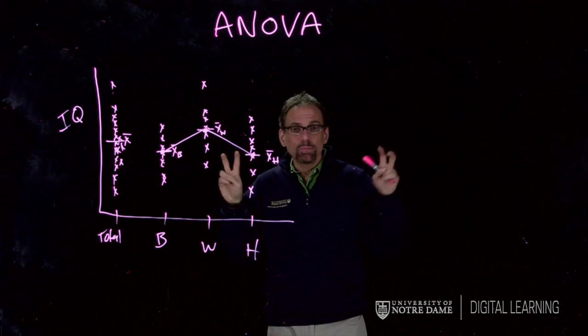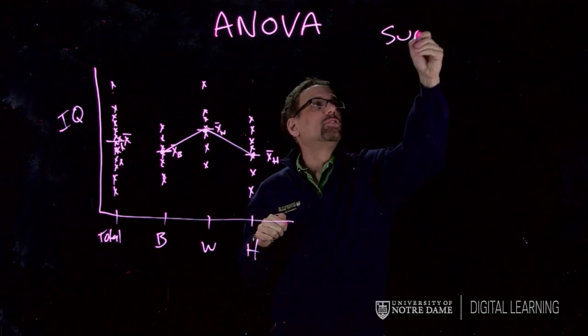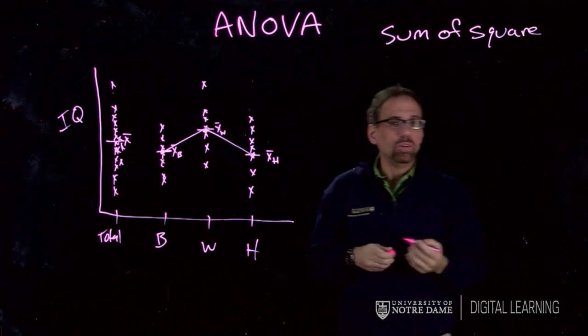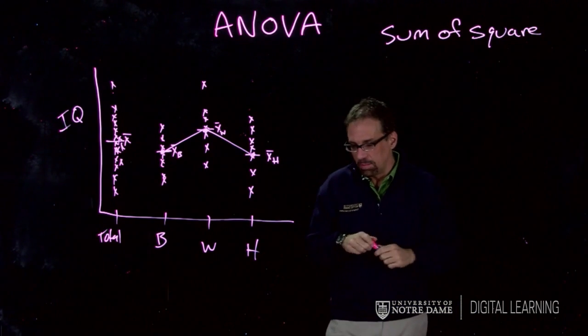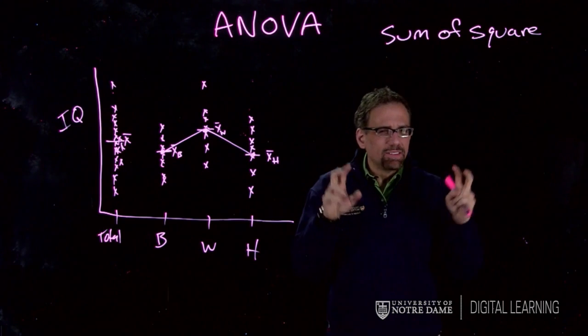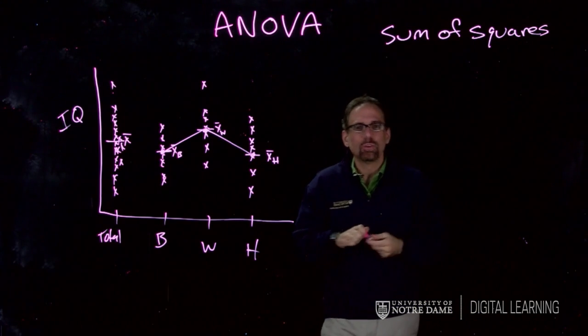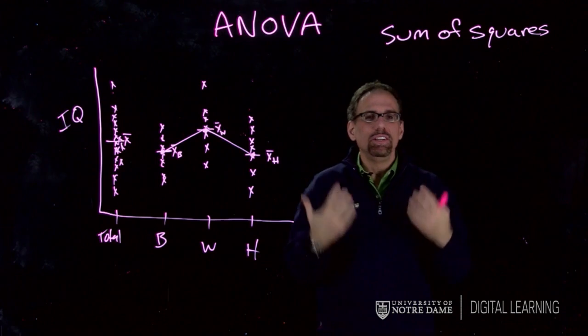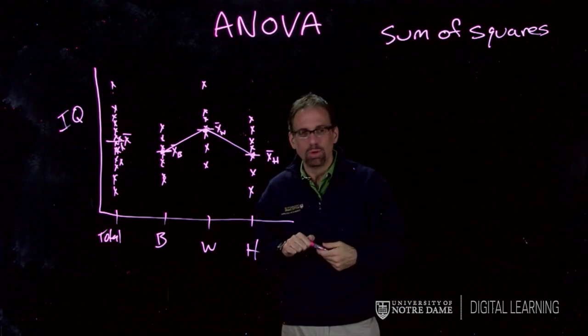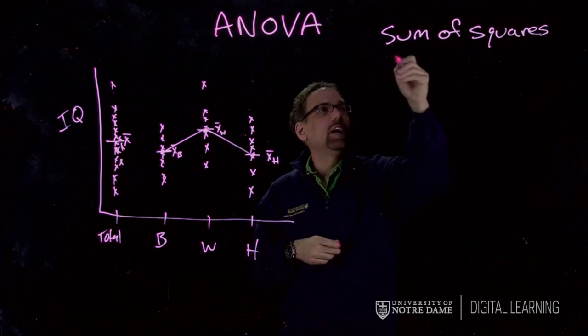The total variation is something we call sum of squares. This should be an old friend to you - you've heard it many times. But it's really not sum of squares, that's just what people call it for short. It's really the sum of the squared deviations from the mean. That should sound familiar to you. We've done that a lot of times. This is the total variation.